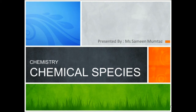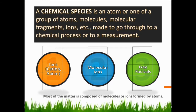Welcome to Chemical Species. I am your chemistry teacher Samil Longtas. First, what is a chemical species? A chemical species is an atom or one of a group of atoms, molecules, molecular fragments, ions, etc., made to go through a chemical process or to a measurement.